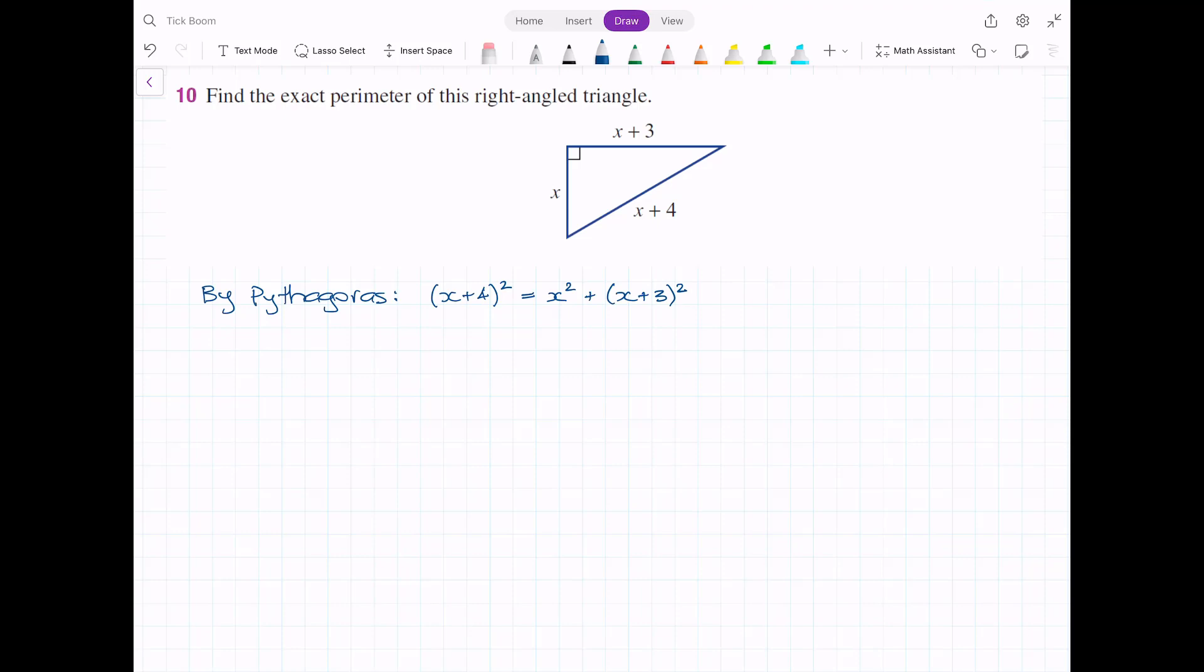To solve this question, we just need to expand and simplify this equation, solve for x, and then put x back into the various sides to work out the perimeter. Remember, the question isn't asking us to work out x, it's asking us to work out the perimeter of the triangle. Finding x is just step one to doing that.